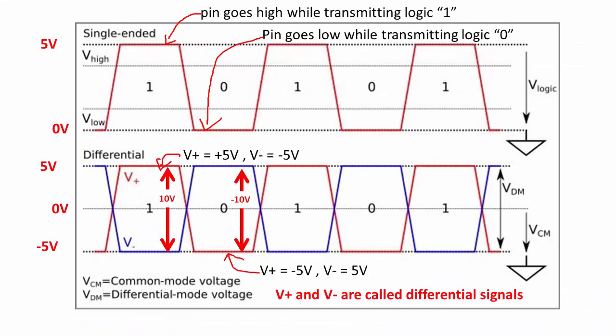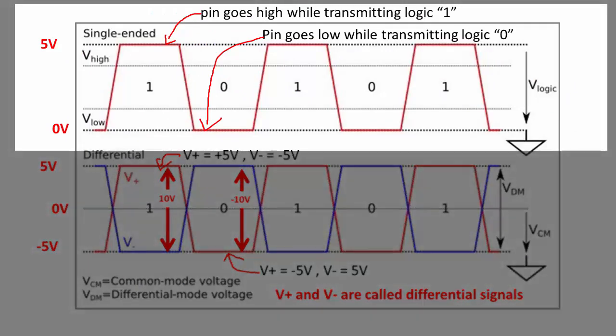The above picture shows single-ended data communication where a line goes high and the receiver interprets that as logical one. When the signal goes to ground (zero volts), the receiver interprets that as logical zero. That's how data communication takes place in single-ended communication.